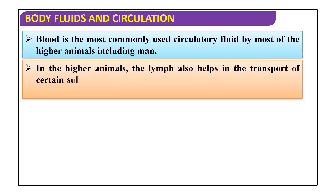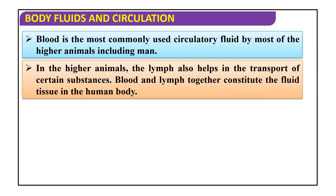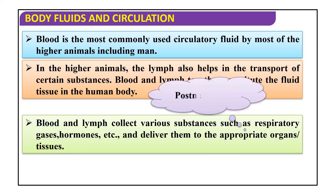Blood is the most commonly used circulatory fluid by most higher animals including humans. We also have lymph, which helps in transport of certain substances like WBCs, macrophages, and lymphocytes — it serves as a defensive mechanism. Blood and lymph together constitute the fluid tissues in the human body. They collect various substances such as respiratory gases and hormones and deliver them to the appropriate organs or tissues — this is sometimes called the 'postman's job.'